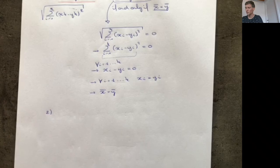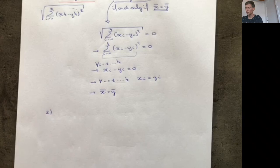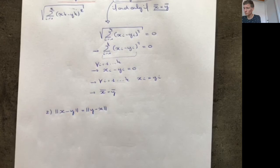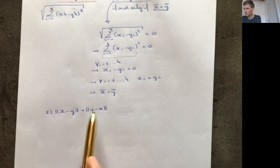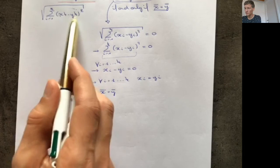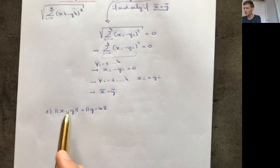The second property is that ||x − y|| = ||y − x||. There's symmetry: the distance from x to y equals the distance from y to x. This follows from the fact that we square the differences — swapping x and y gives the same squared terms, so the sums are identical.